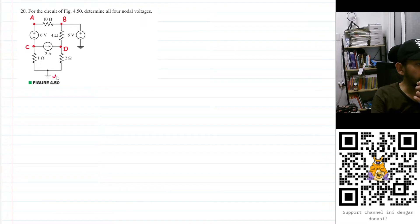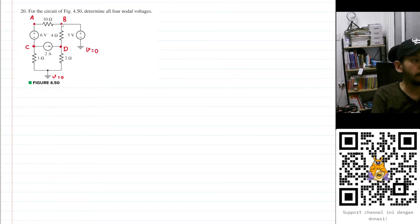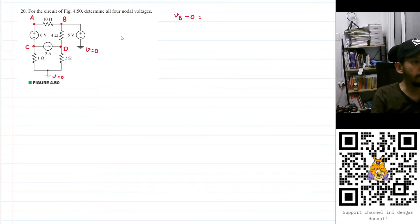We have our ground here, so the voltage here will be zero. This ground is also connected here, so that voltage will be zero too. Right off the bat, we know that VB minus zero equals five volts, which means VB is equal to five volts.